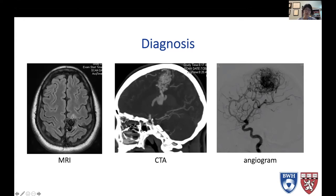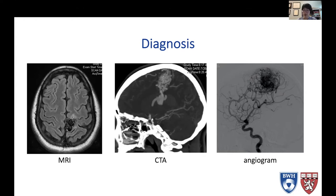MRI will allow you to localize the AVM so you know if it's in an important part of the brain or not — something called eloquence. So you can determine based on the location on an MRI whether the AVM is in an eloquent part of the brain. Whereas an angiogram will show you all the vascular anatomy associated with the AVM.